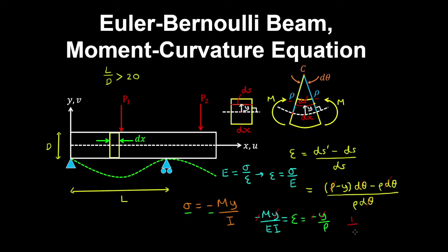Now we can cancel out the y and the negative sign. So that gives the curvature is equal to the bending moment over the bending stiffness EI.